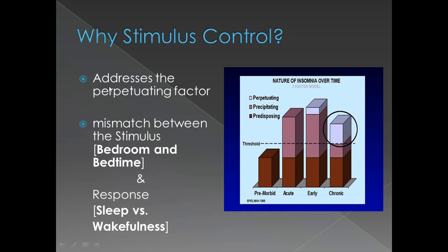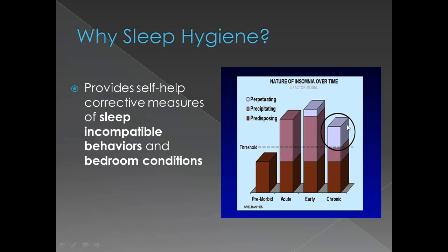Why stimulus control? Stimulus control addresses the perpetuating factor of the mismatch between the stimulus — bedroom and bedtime — and the response, which is sleep versus wakefulness. This continues the perpetuating factors and insomnia has its own life. Sleep hygiene provides self-help corrective measures of sleep-incompatible behaviors and bedroom conditions, and once again it perpetuates insomnia behavior if left unaddressed.